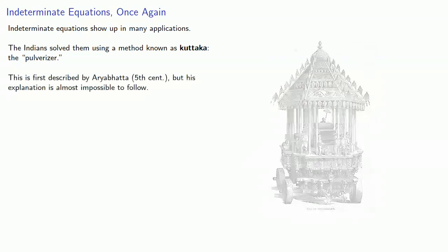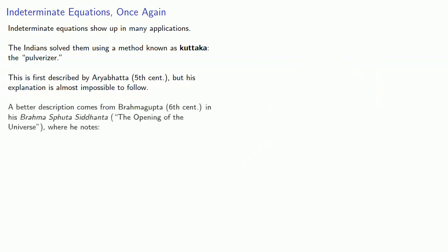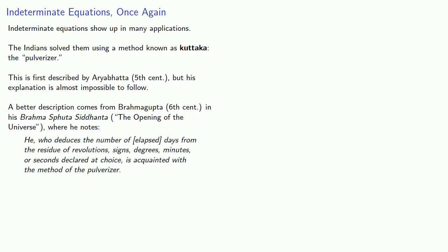This is first described by Aryabhata in the 5th century, but his explanation is almost impossible to follow. A better description comes from Brahmagupta in the 6th century in his Brahmasphuta Siddhanta, the opening of the universe, where he notes: he who deduces the number of elapsed days from the residue of revolutions, signs, degrees, minutes, or seconds, declared at choice, is acquainted with the method of the pulverizer.